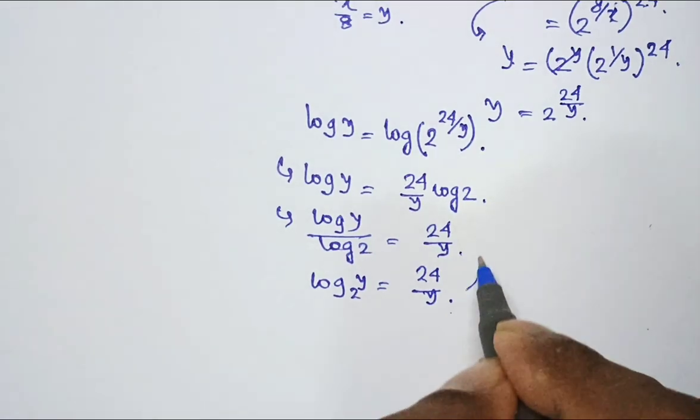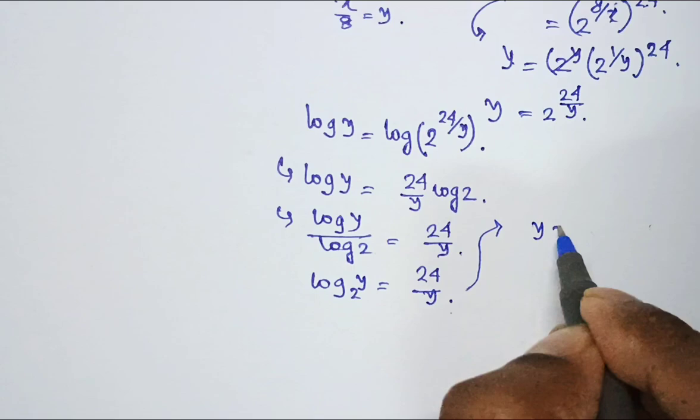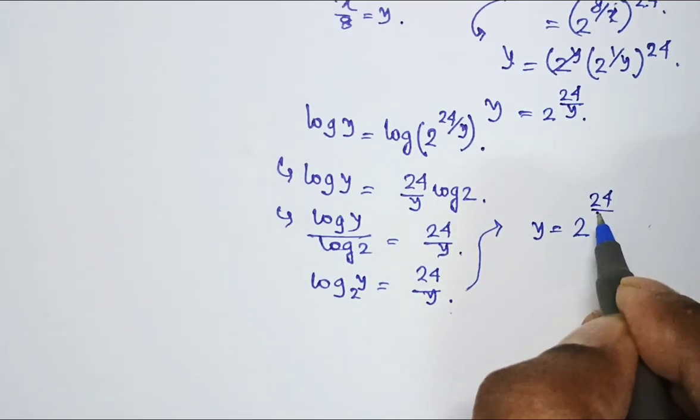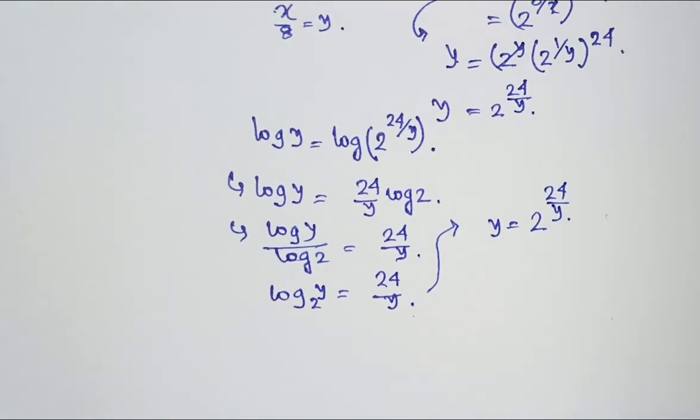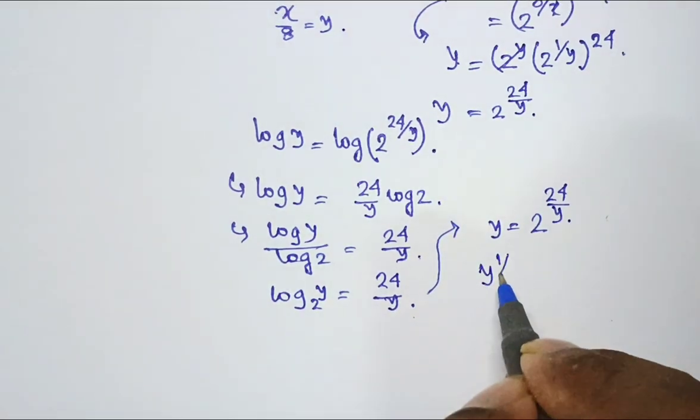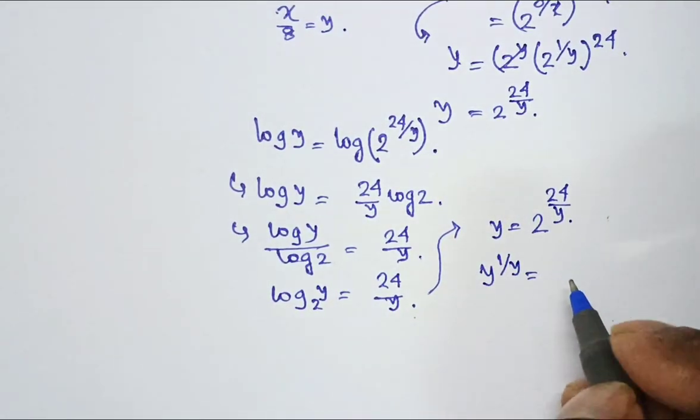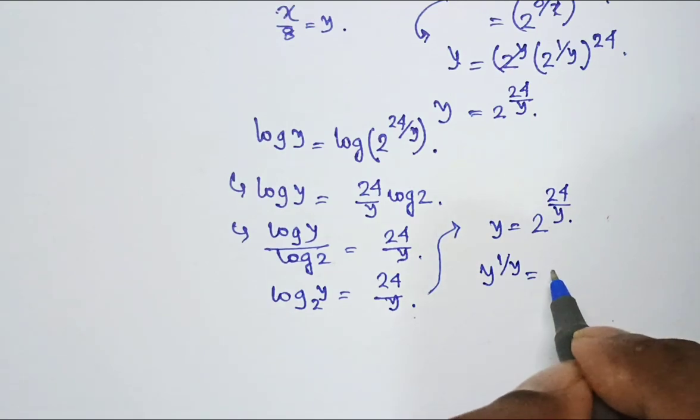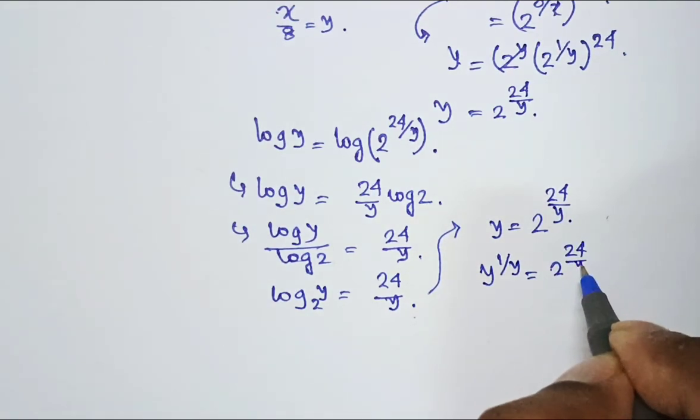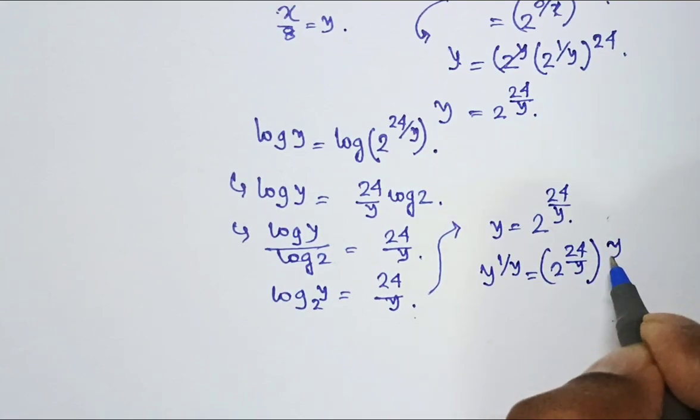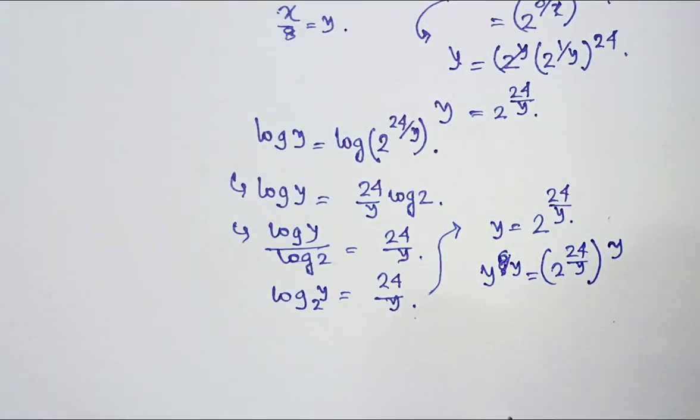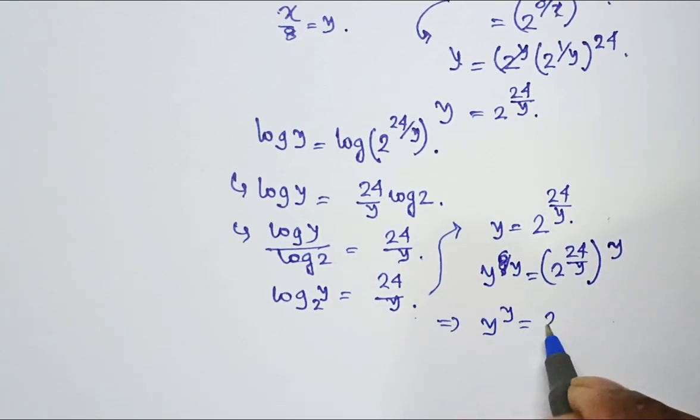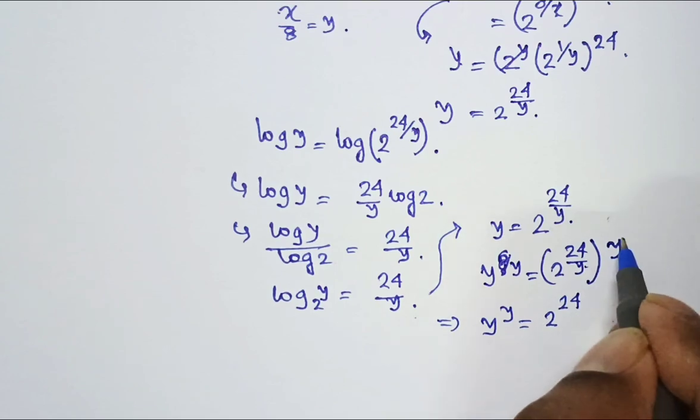So obviously from here I can write y as 2 to the power 24 by y. What is y? y is x by 8. Now if I do y to the power y, I am doing indexing with 2 to the power y. So it becomes y to the power y is 2 to the power 24 because this y and this y gets nullified.